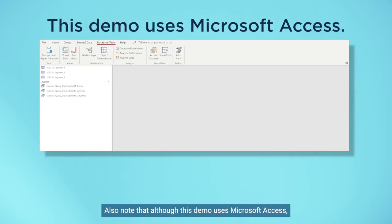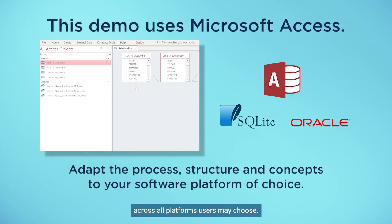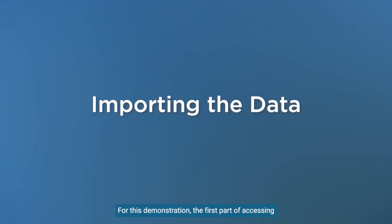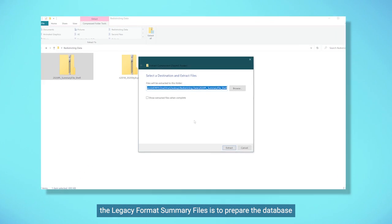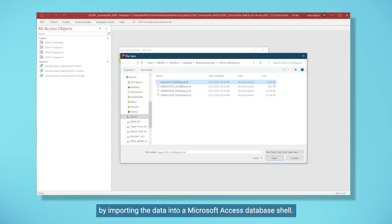Also note that although this demo uses Microsoft Access, the process, structure, and concepts are the same across all platforms users may choose. For this demonstration, the first part of accessing the legacy format summary files is to prepare the database by importing the data into a Microsoft Access database shell.